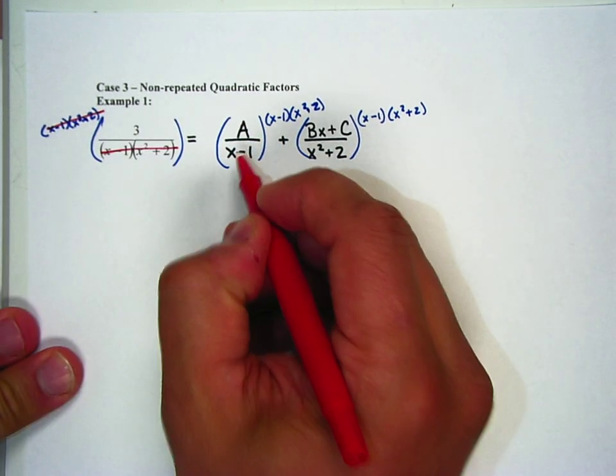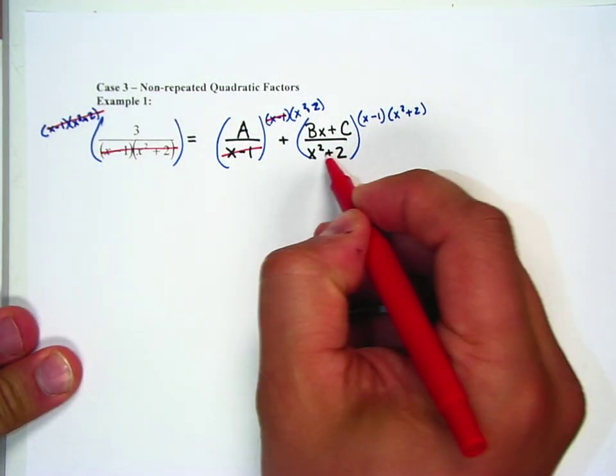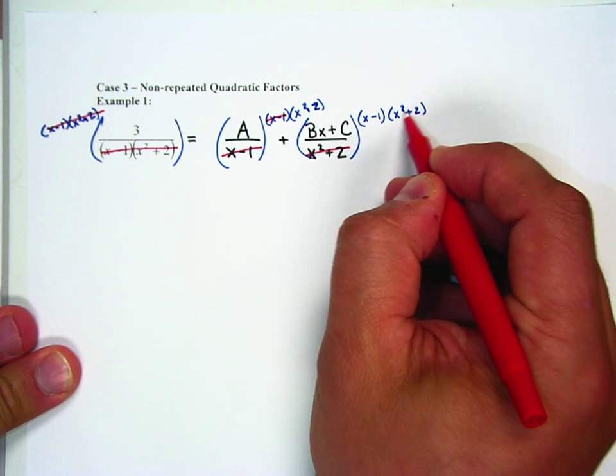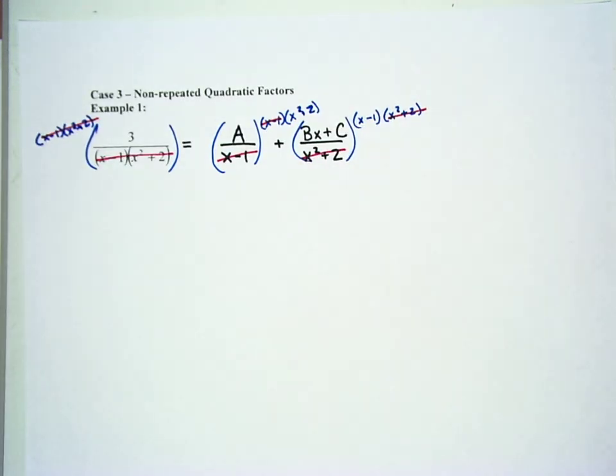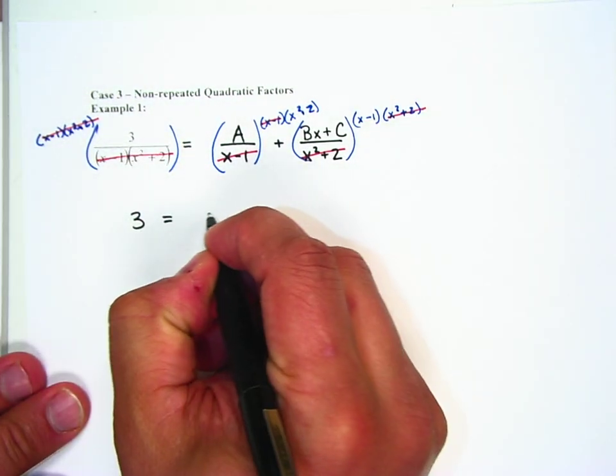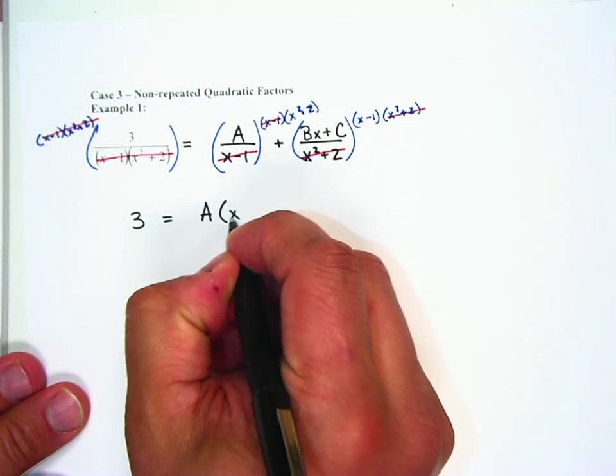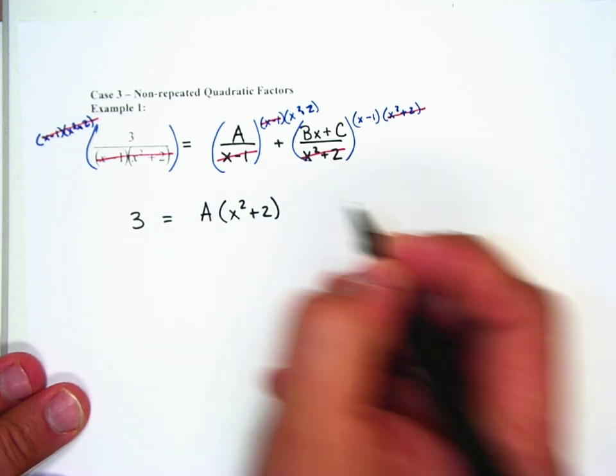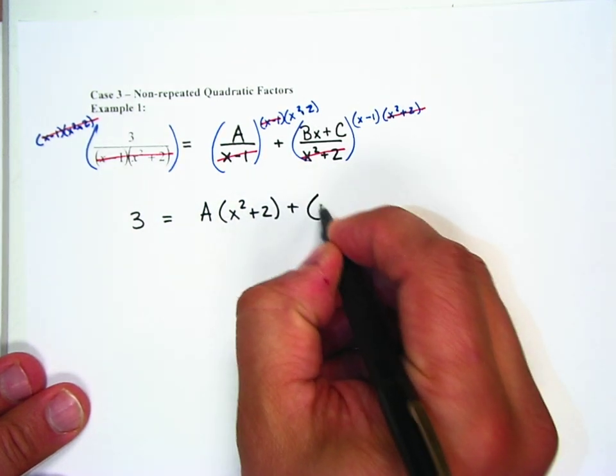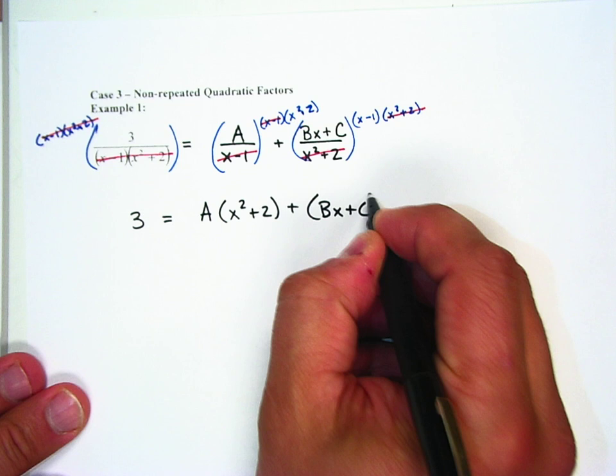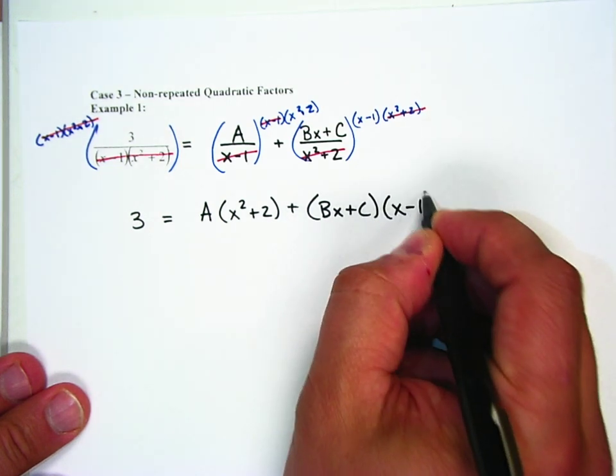Good. On the right side, the x minus 1s cancel. And then the next part, the x squared plus 2s cancel, leaving me with 3 on the left, A(x squared plus 2) plus (Bx plus C) times (x minus 1).